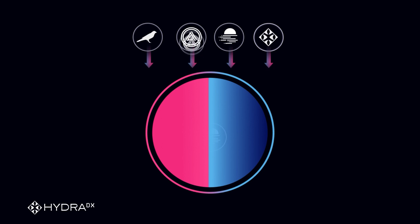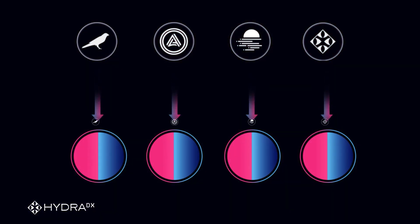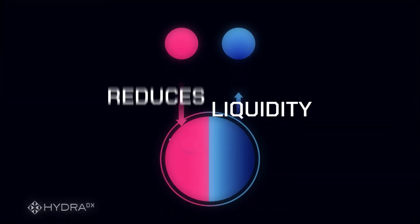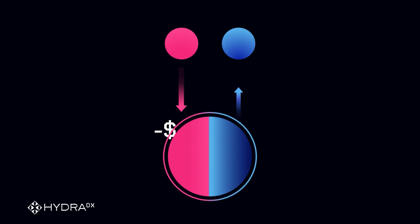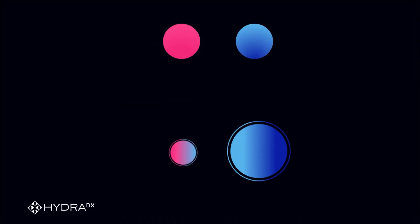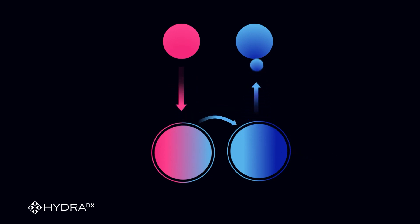The problem with this model is that when you want to swap a lot of different assets, you will need a lot of different pools. First of all, this reduces the liquidity a user has direct access to, which is the key determining factor of how close to the market price they trade at. Second, this causes higher slippage if a trade cannot be completed using only one liquidity pool and needs to hop to another pool for more liquidity. Each pool will need to take a trade fee, resulting in higher fees paid by the user.